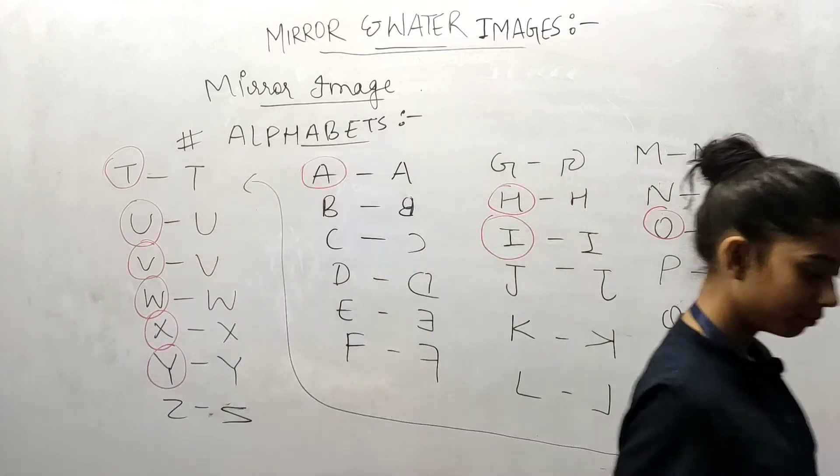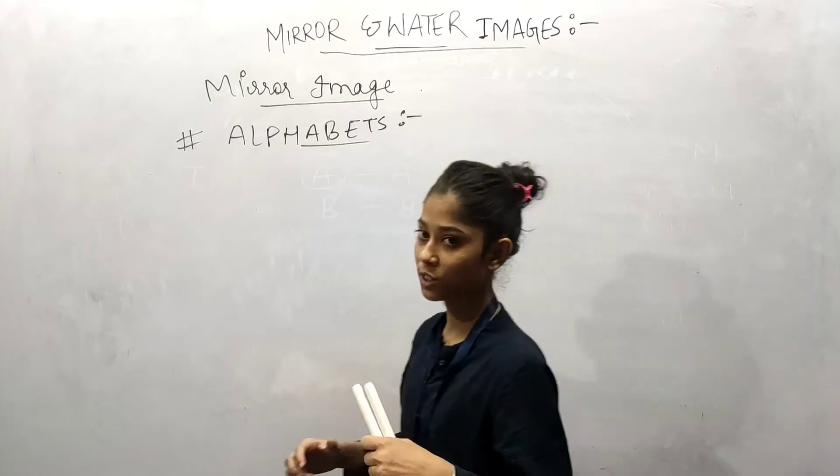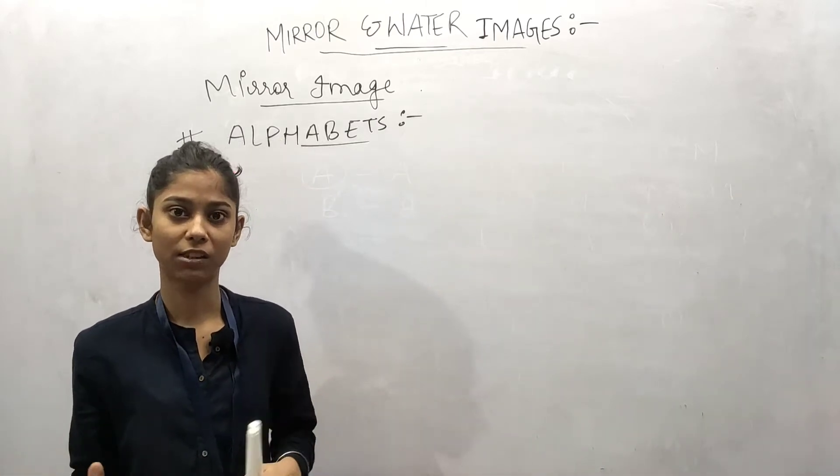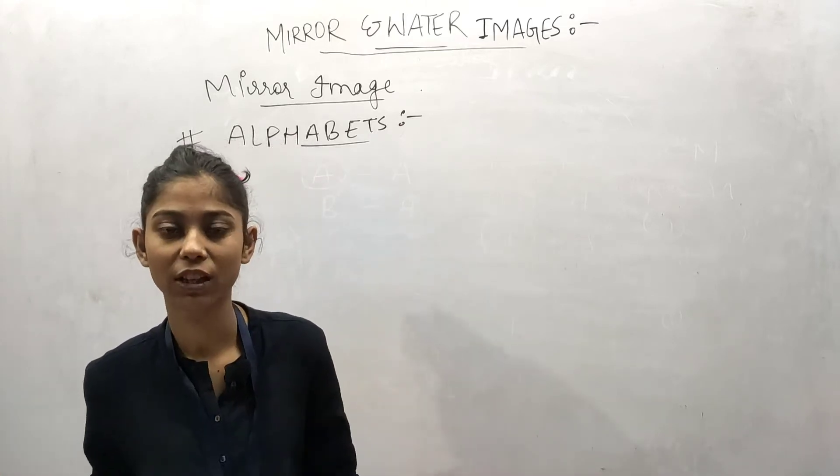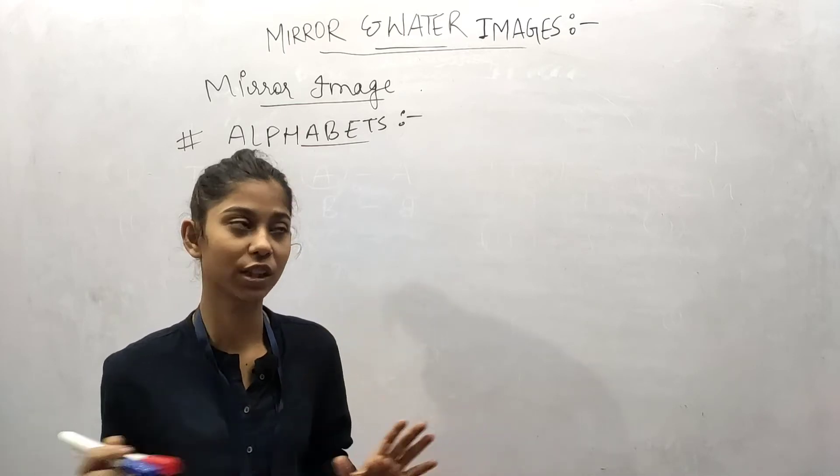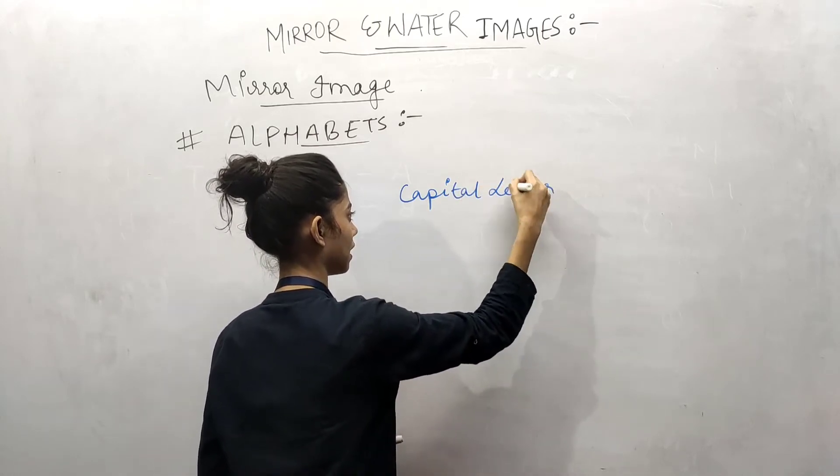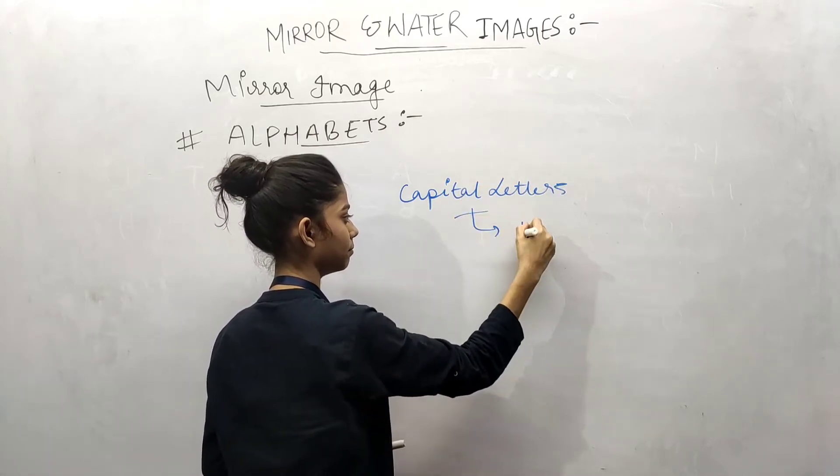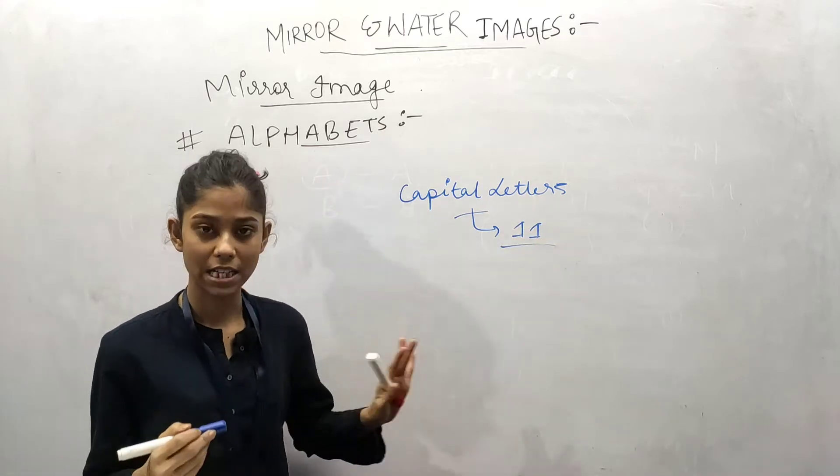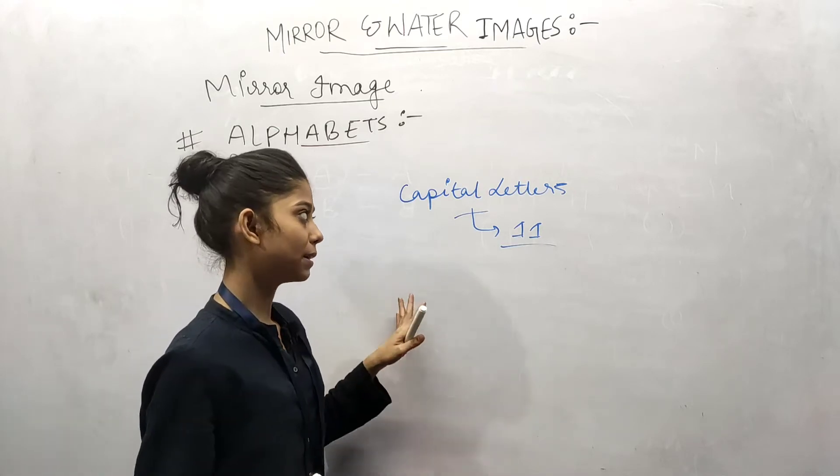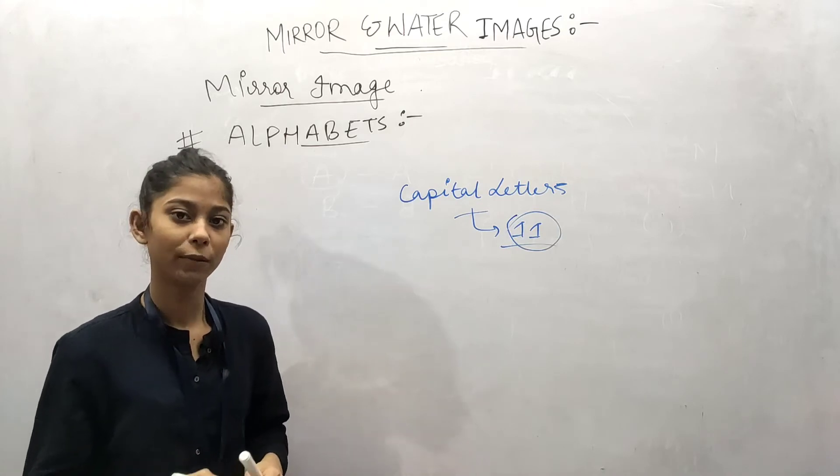There are some letters that don't change in mirror image, the same order is the same. So note. So that was the capital letters. Now we will see the small letters. In capital letters there were 11 letters that didn't change. There was no change, it was the same way, there was also appear in mirror image. So you will memorize it properly. If you remember this 11, so if it is used anywhere then you can pass it.